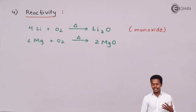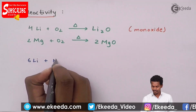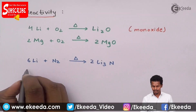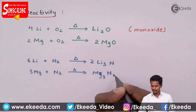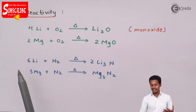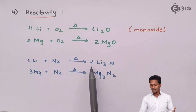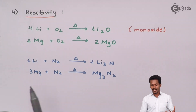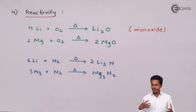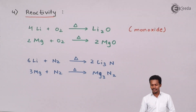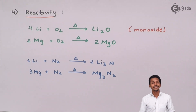Now let us understand what happens when the metals react with nitrogen. When 6 moles of lithium metal react with nitrogen, Li₃N is produced, which is known as lithium nitride. When magnesium is treated with nitrogen, it forms Mg₃N₂, which is magnesium nitride. Both lithium and magnesium react with nitrogen very easily. This was related to their reactivity with oxygen and nitrogen, and further shows they have similar properties.